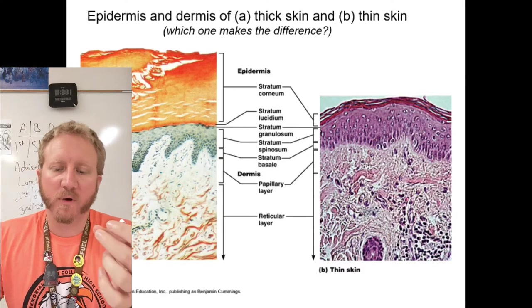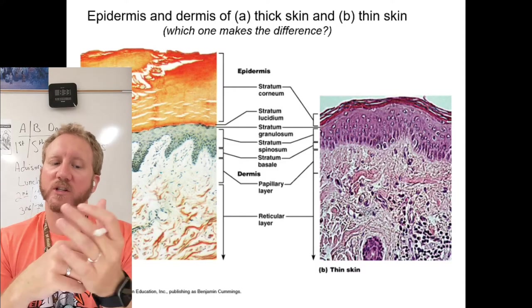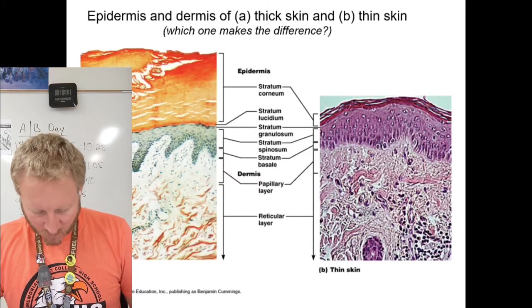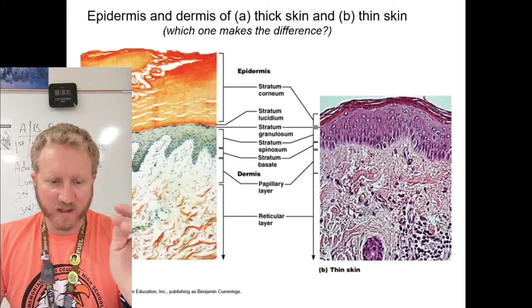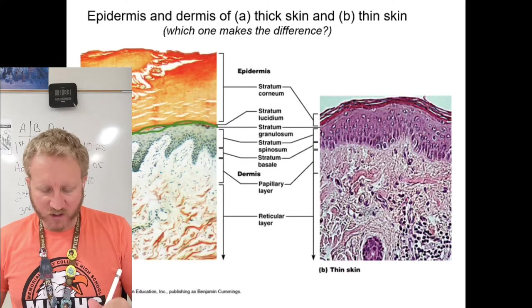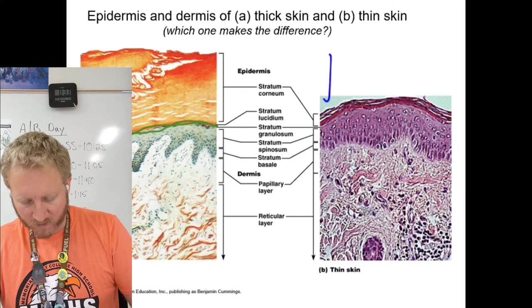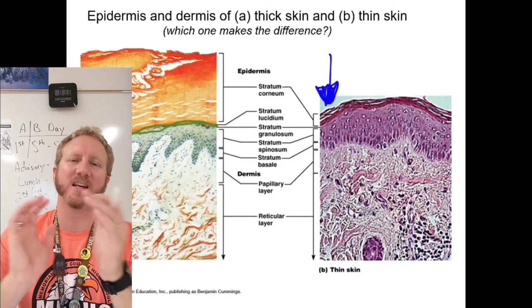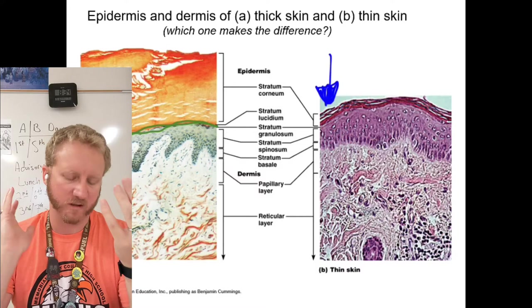In some areas we have the stratum lucidum — an additional layer found only in thick skin, in places needing lots of grip or traction: the palms of your hands and soles of your feet. Comparing the two pictures side by side, the stratum corneum — the outermost layer — is really thick in these areas, and there's this additional thin layer, the stratum lucidum, shown as an orange layer, that's only in thick skin.